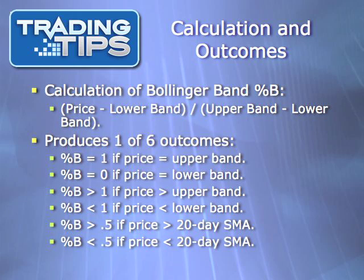Percentage B equals 1 when price is at the upper band. Percentage B equals 0 when price is right at the lower band. Percentage B is greater than 1 when price is above the upper band. Percentage B is less than 0 — i.e., negative — when the price is below the lower band.